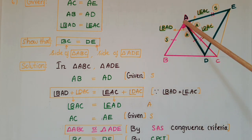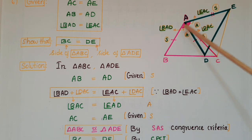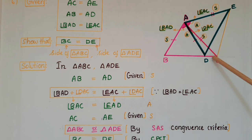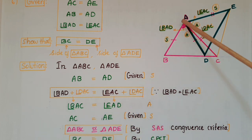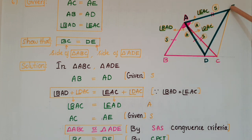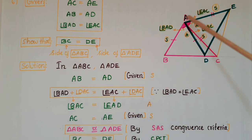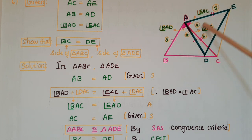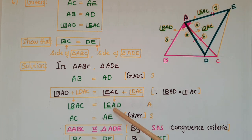And angle BAD is equal to angle EAC. These two angles are equal. If you add angle DAC to these two angles, then it becomes angle BAC — this is the angle of triangle ABC — and it becomes angle EAD, which is the angle of triangle ADE. So these two angles of the two triangles are equal.